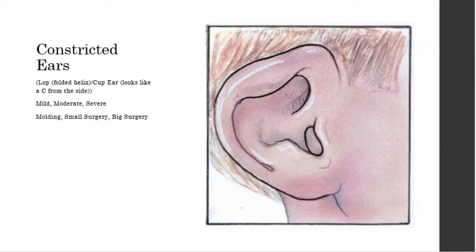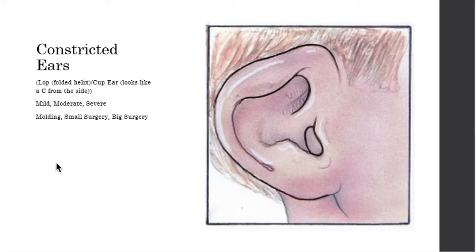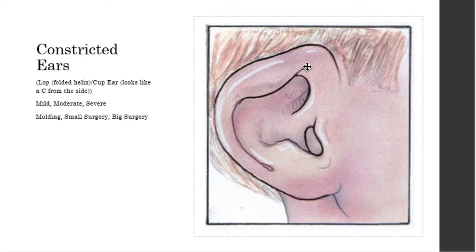The constricted ear is discussed in terms of mild, moderate, and severe. A lop ear has a folded-over helix; a cup ear looks like a C from the side and is a much more severe deformity. For a mild constricted ear, molding in the first few weeks of life is ideal. For moderate, small surgeries like V-Y advancement flaps. For severely constricted ears falling into the microtia range, a big surgery is needed — auricular reconstruction with costal cartilage.